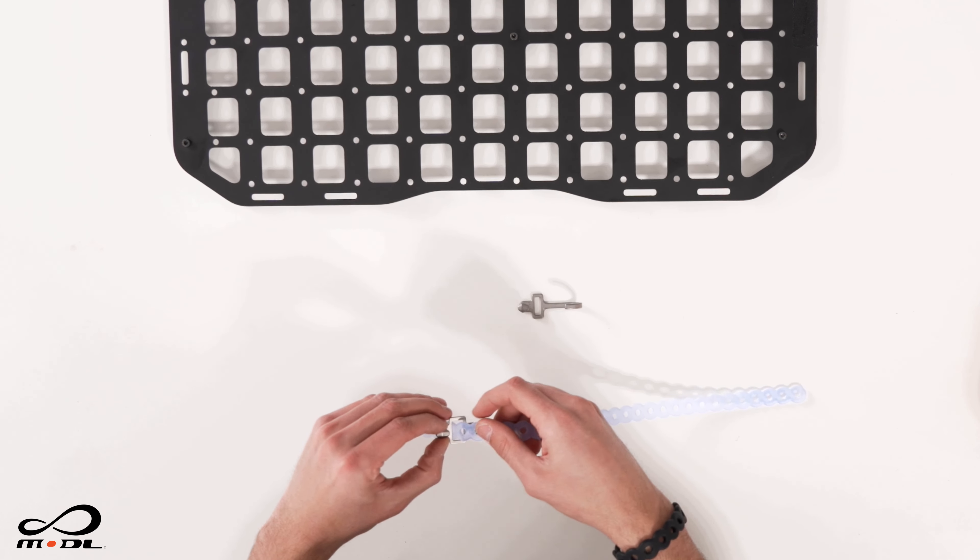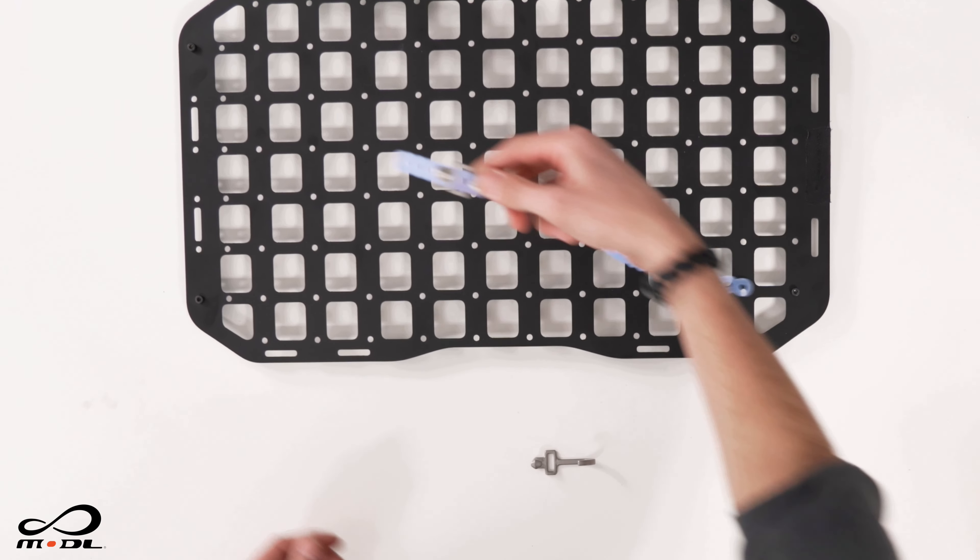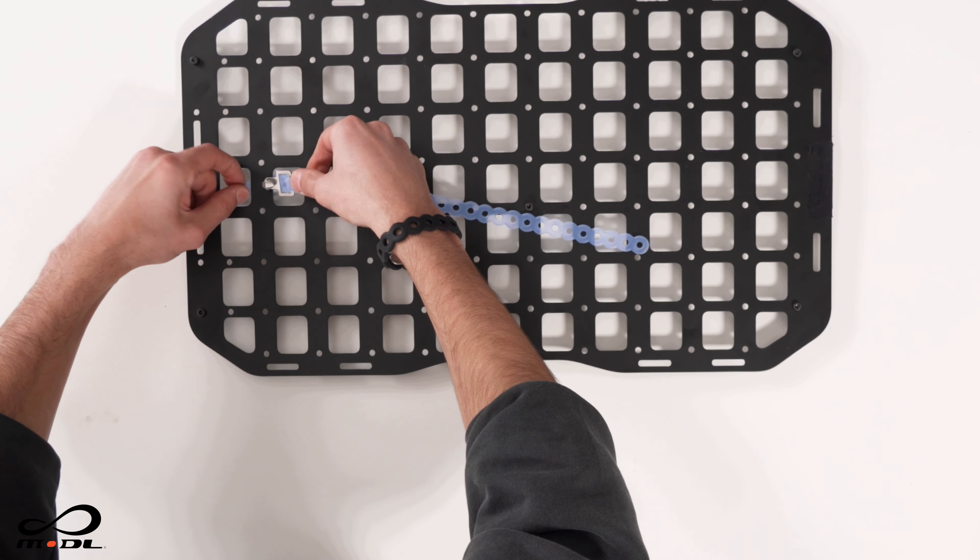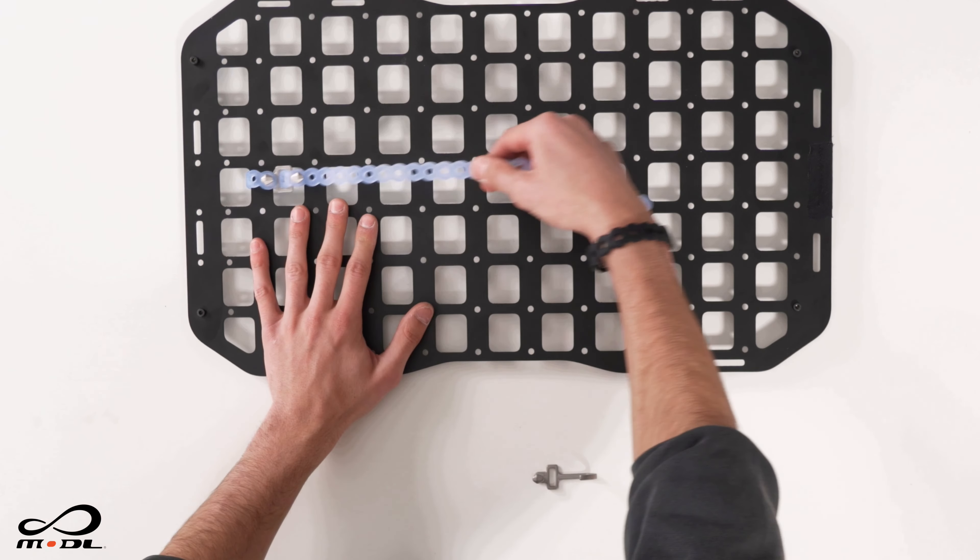What you're going to do first is you're going to mount the loop. So you're going to put this through like this and then loop this end piece around where you want to mount it. Now that's mounted.